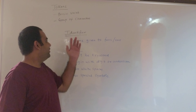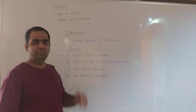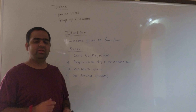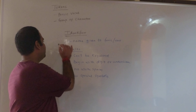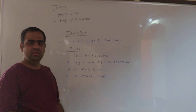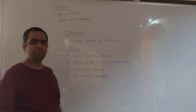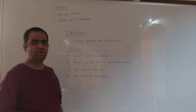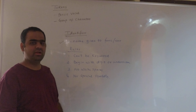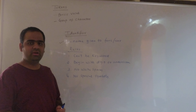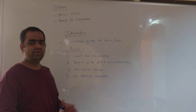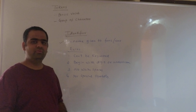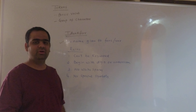The next type of token we will see is an identifier. An identifier is a name given to a function or variable. Like we give names to a person, that is called an identifier in natural language. In programming we call it an identifier. There are some rules for an identifier: an identifier cannot be a keyword, because keywords are reserved words.